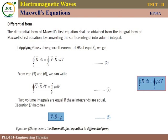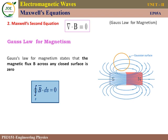Next, Maxwell's second equation. Maxwell's second equation is del dot B equals zero, derived from the Gauss law for magnetism. So what is the Gauss law for magnetism? Gauss law for magnetism states that the magnetic flux B across any closed surface equals zero.